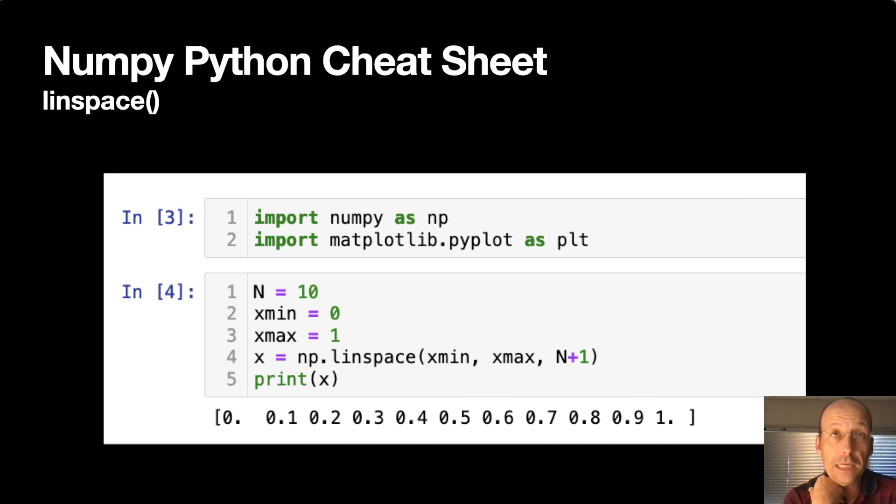The first is this function linspace. You need to import NumPy. I always import matplotlib.pyplot. Linspace is a way to arrange a bunch of numbers and make an array. Arrays in Python are so awesome and super important because they're better than lists. They're like lists on superpowers. Right here I have just a starting value xmin, a final value xmax, and linspace I do xmin, xmax, and N plus 1.